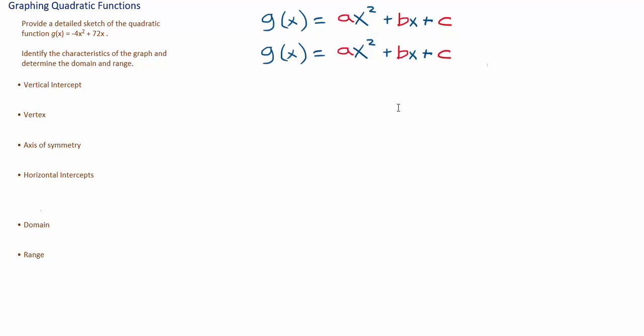The first thing I want to do is identify the values of a, b, and c for my function. So notice for my function, a is negative 4, and the b value, the coefficient on x, is 72. And since there is no constant in my equation, you can think of c as being 0, so I'm just going to delete it.